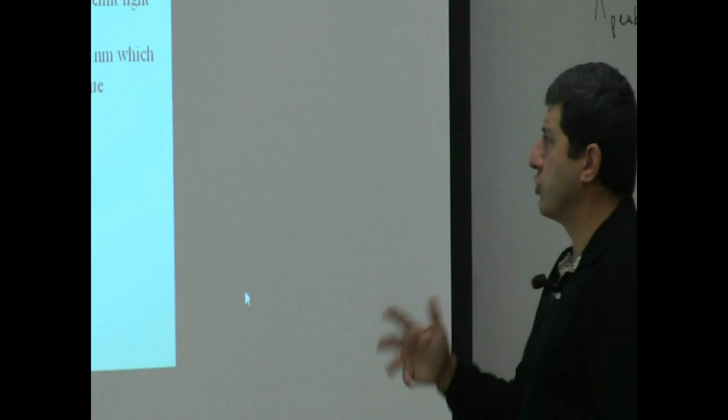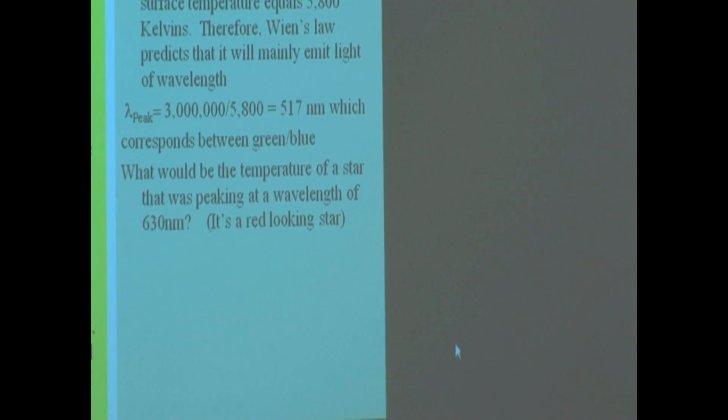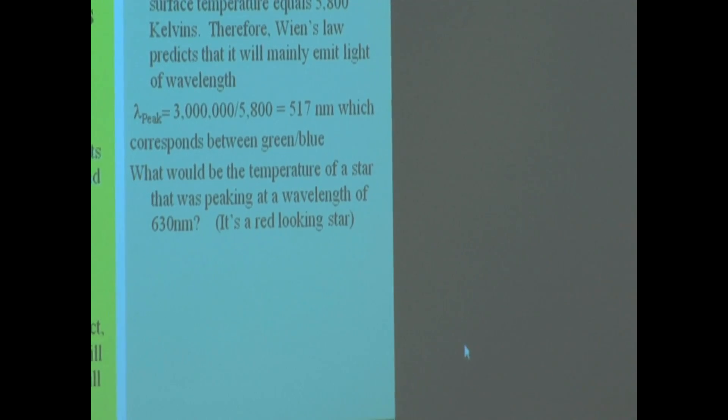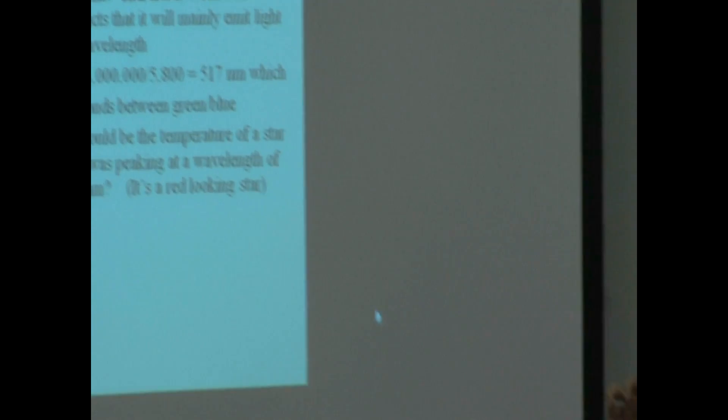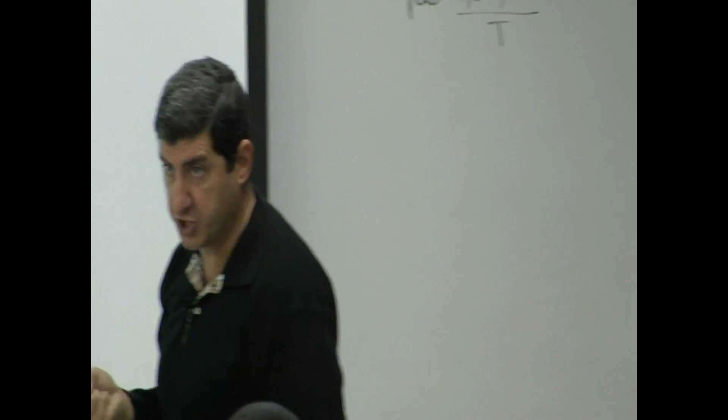And then, when you do this, it already gives you an answer in a nanometer. So 517 nanometer, corresponds green-blue range, between green and blue. And what happens, our atmosphere absorbs some of that, and then primarily, we get the yellow-looking star. It appears yellow.